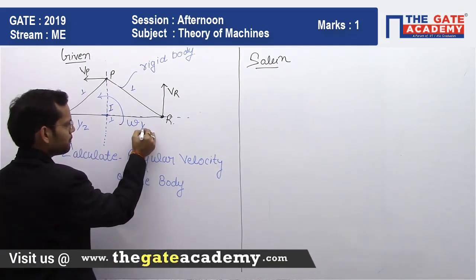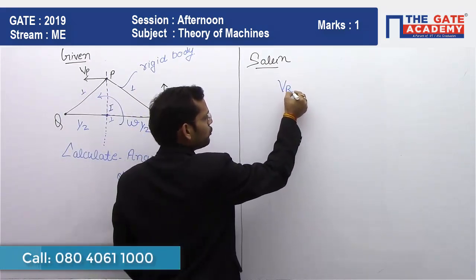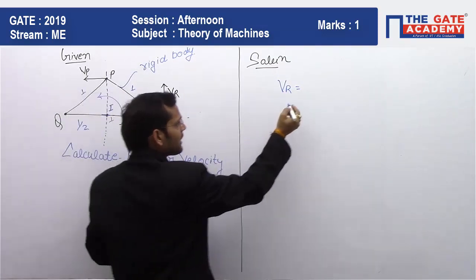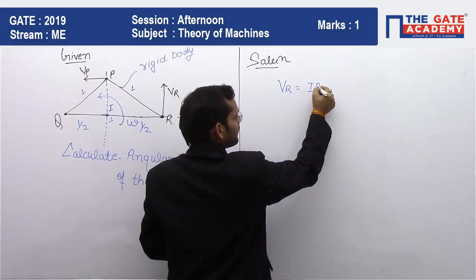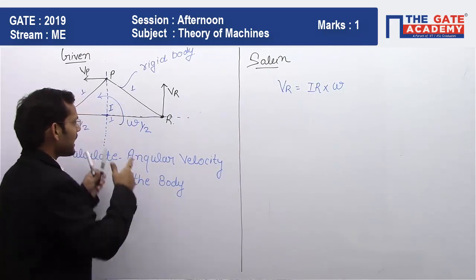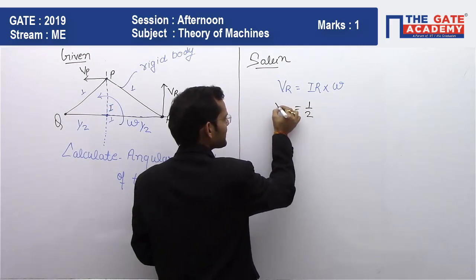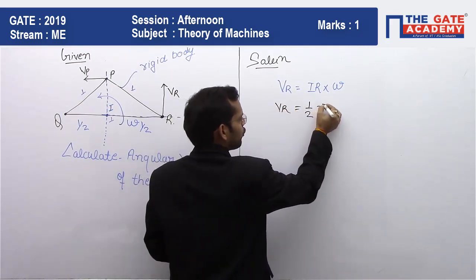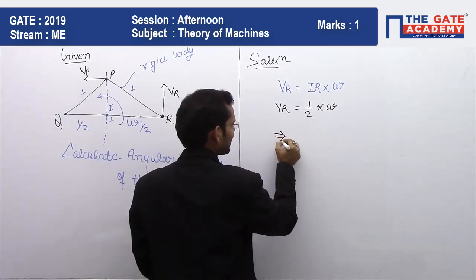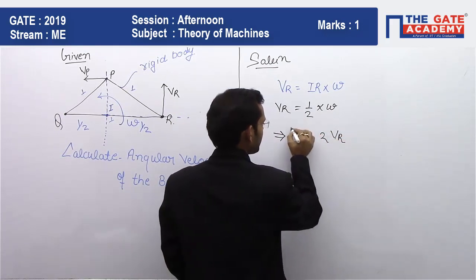So this distance will be 1/2 and this will be 1/2. From here, VR will be equal to the radius IR multiplied by omega, that is the angular velocity of the body. IR is equal to 1/2. VR is already given, and omega is the value we have to calculate. Therefore, we get the angular velocity of this body equal to 2VR.